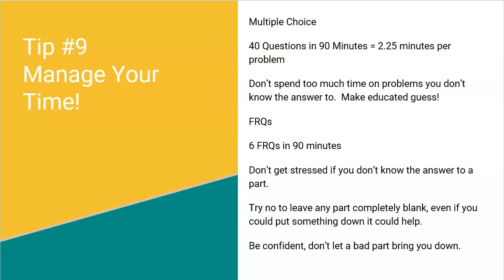So that doesn't necessarily mean set a timer and spend exactly 2.25 minutes on every single problem because some are going to take much shorter. But if you're spending 5, 6, 7 minutes on a problem, move on. Don't spend too much time on problems you don't know how to do. Make an educated guess. Typically, 2 of the 5 multiple choice are just completely wrong if you just think about what the problem is asking. And then all of a sudden, you've got a one-third chance of guessing it right.